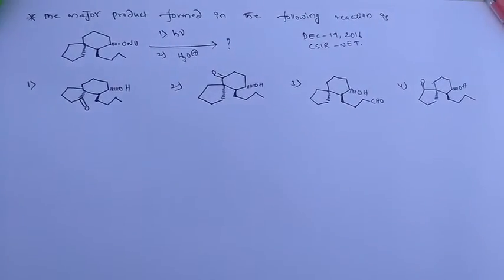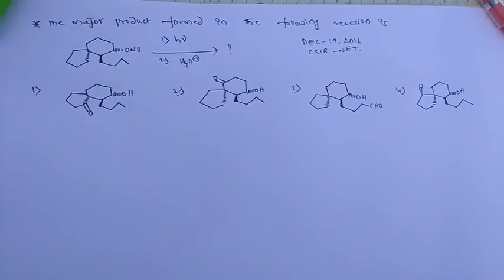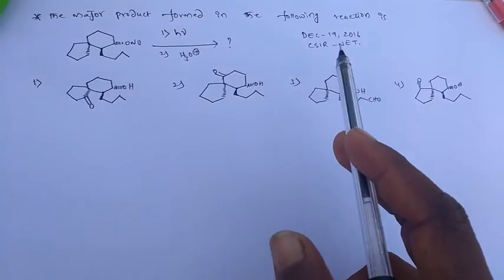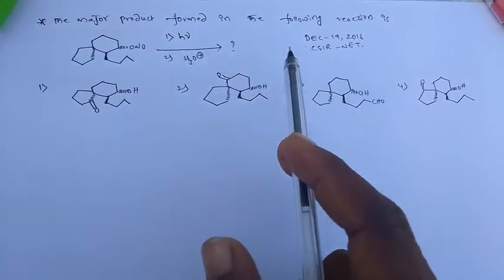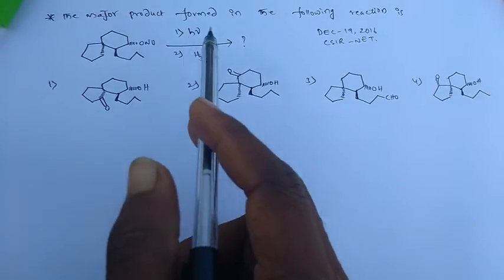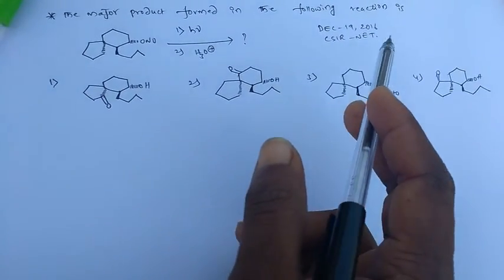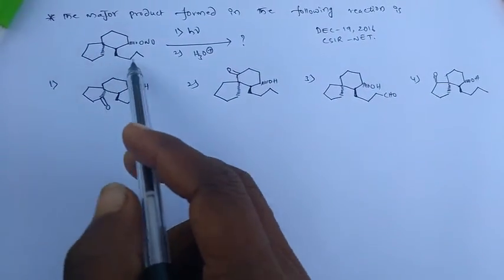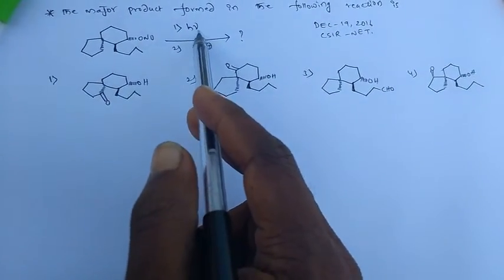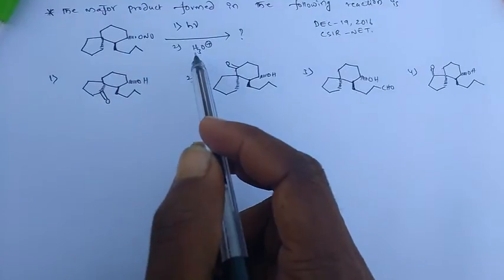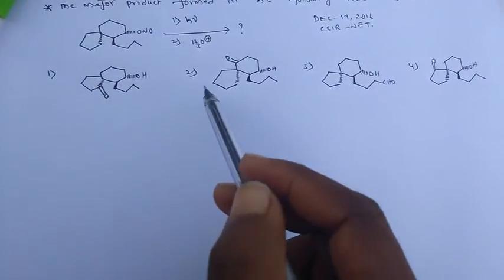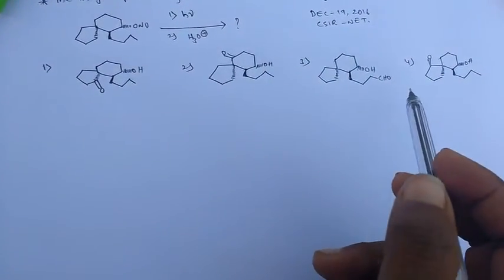Hi, this is Chiranjivy. This question appeared in the December 2016 CSIR NET exam. The question is: the major product formed in the following reaction is — we have the reactant here under photochemical conditions and H3O+. What will be the product among the given four choices?